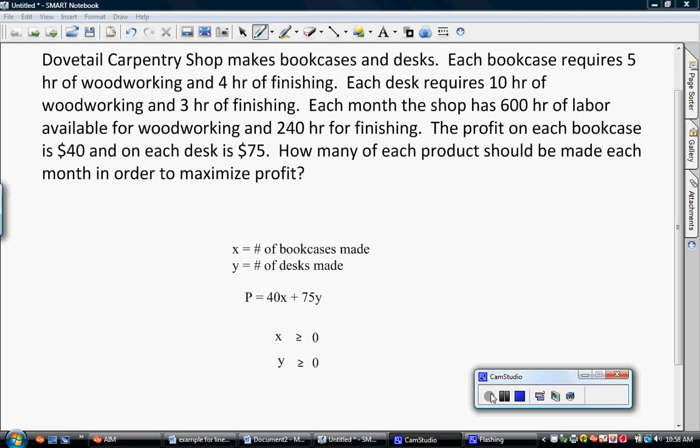So when we say that each bookcase requires five hours of woodworking, we then need to find out how many hours of woodworking the desk requires. As you can see, I've circled numbers in both black and in blue. The numbers in black represent woodworking. They also represent the woodworking for the bookcase and the woodworking for the desk. The numbers in blue represent finishing for the bookcase and for the desk. Now if we're paying close attention, we have our equations.